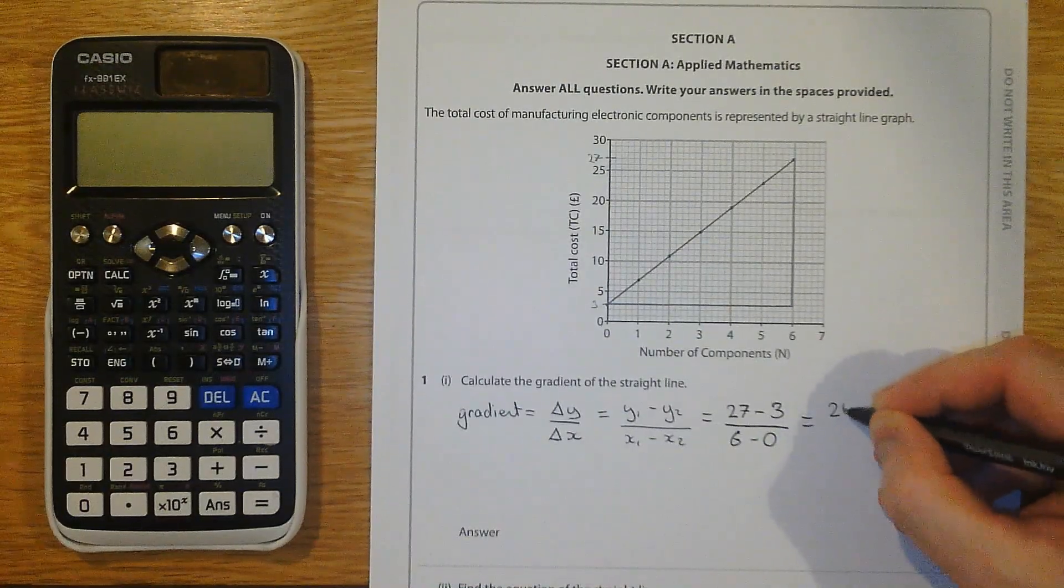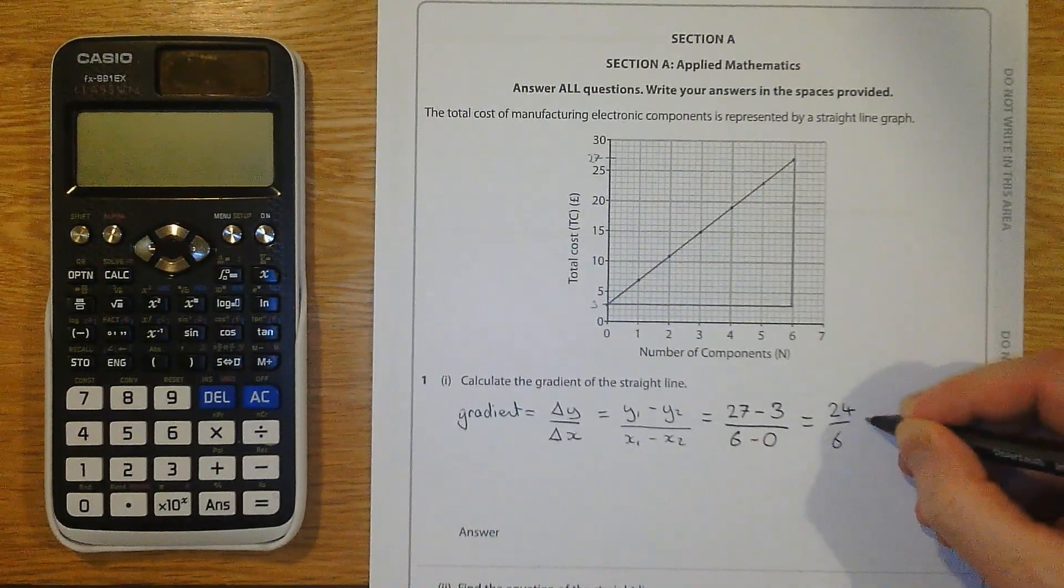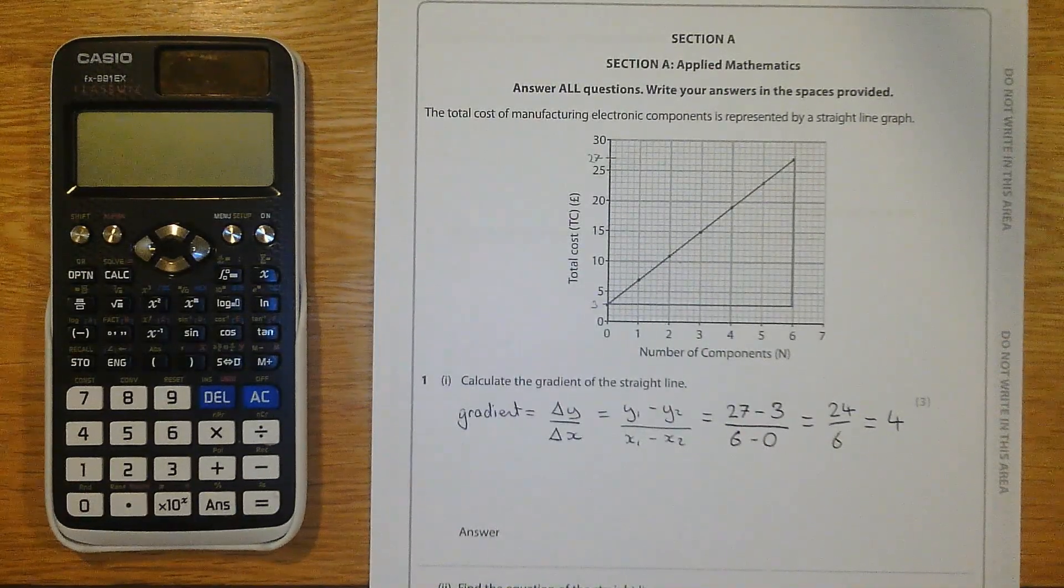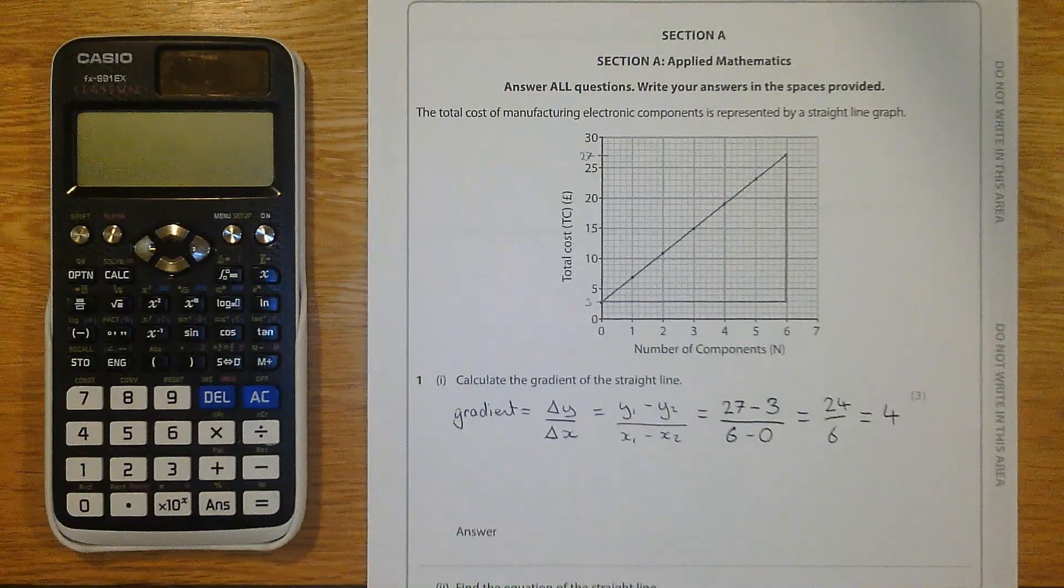Simplify, 24 over 6, which itself equals 4. So I found the gradient, and the gradient is equal to 4.